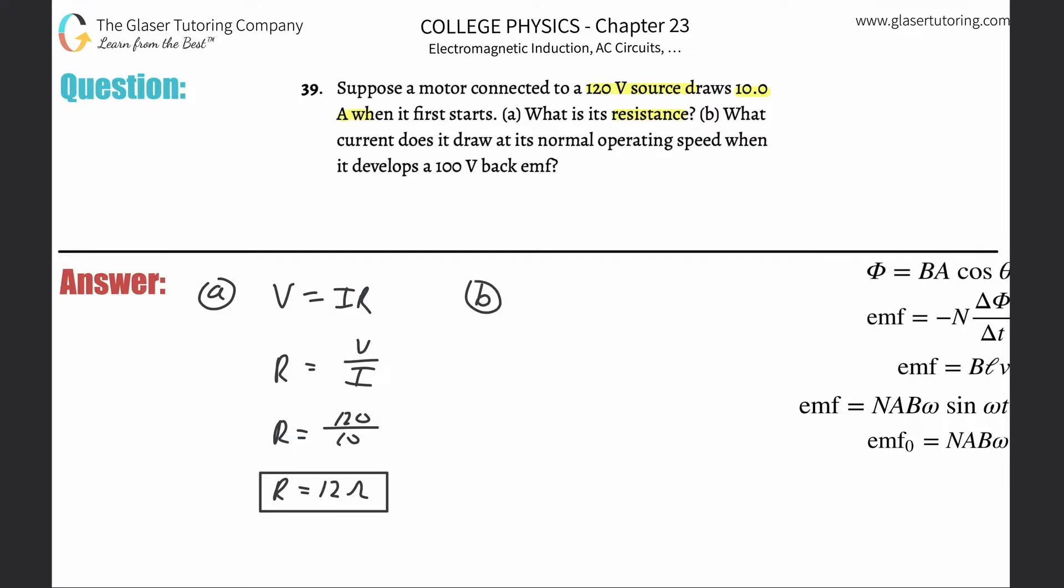Now for letter B, what are they asking? They're saying what current does it draw at its normal operating speed when it develops 100 volts of back EMF?